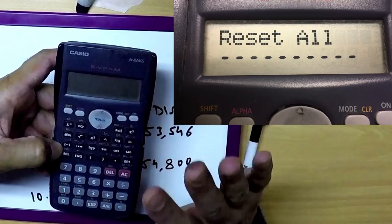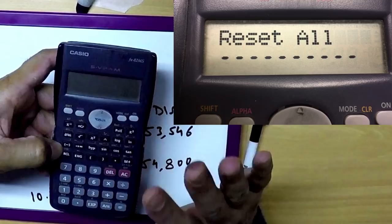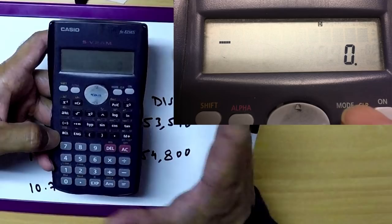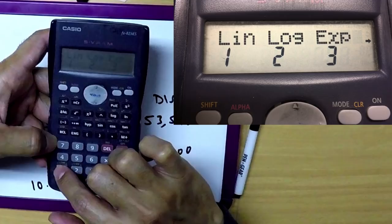Once it's reset, you need to go into REG LINEAR mode. Press mode button once, and you will see REG is 3. You press 3, and then you have to go linear, so you press 1. Now this calculator is in REG mode.